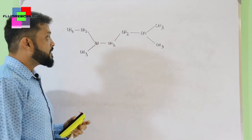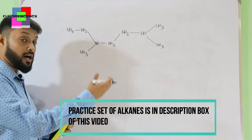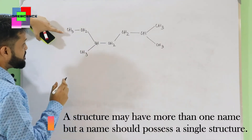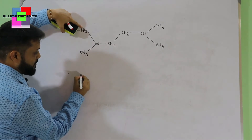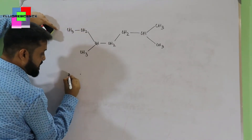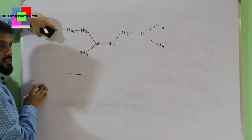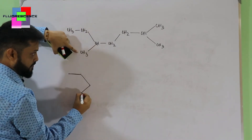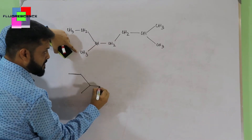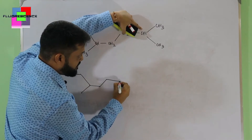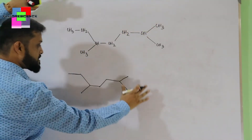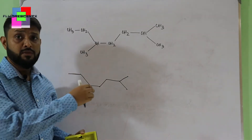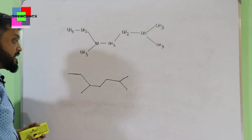Now starting with the first compound. I will represent the same structure using bond line notation. I represent each carbon with a dot, and bonds with lines, forming a bond line structure. I connect carbon to carbon using these lines, including the upper and lower branches. This is our bond line structure representing the original structure. From now onwards, whenever I draw any structure I will use this type of bond line structure. Let's start with the nomenclature process.